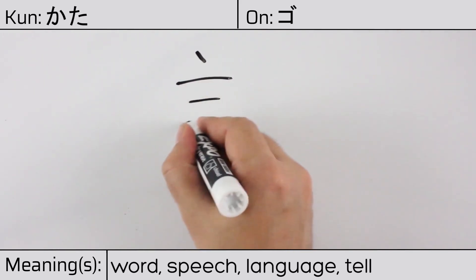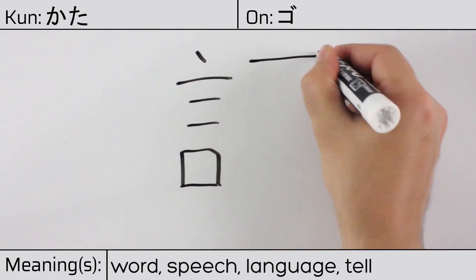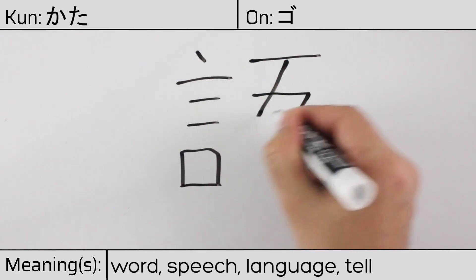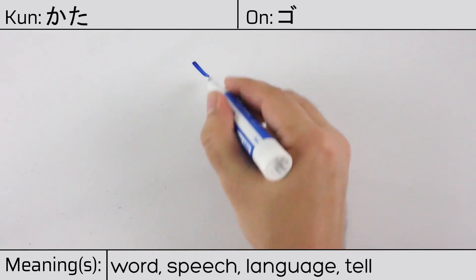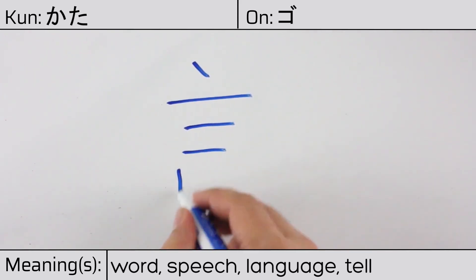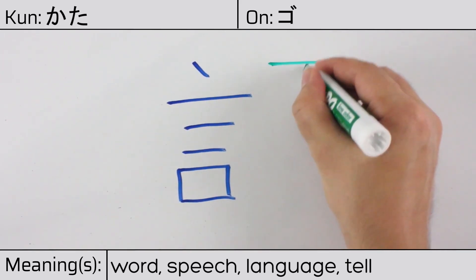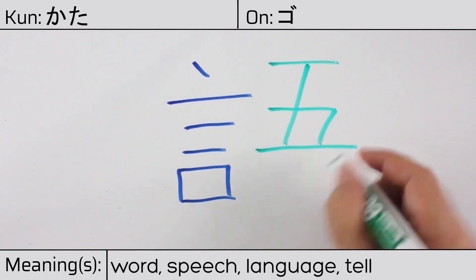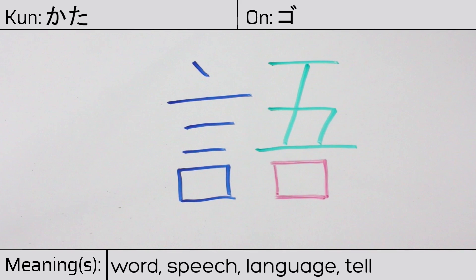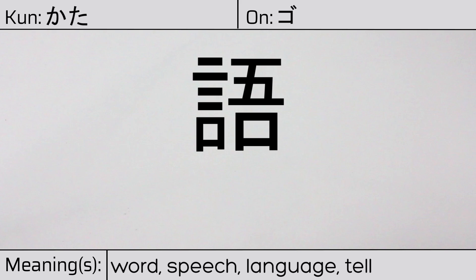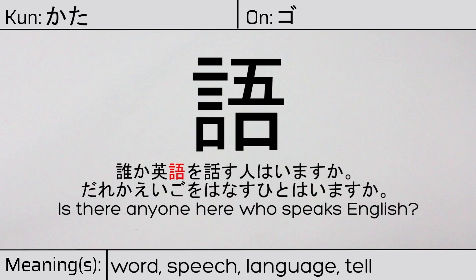Here is the stroke order. This character is made up of the following radicals or parts: speech go on the left, followed by kanji go meaning number 5, and finally mouth or kuchi. You can remember this kanji by the following hint: words spoken by an independent group. Our example sentence is: 誰か映画を話す人はいますか？ — Is there anyone here who speaks English?